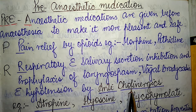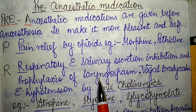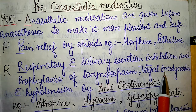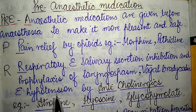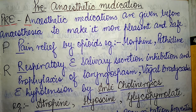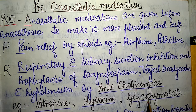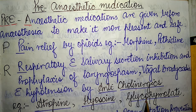The anticholinergic drugs used for prophylaxis of laryngospasm, vagal bradycardia, and hypotension include atropine, hyoscine, and glycopyrrolate.